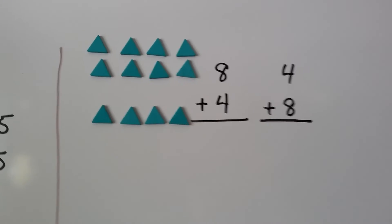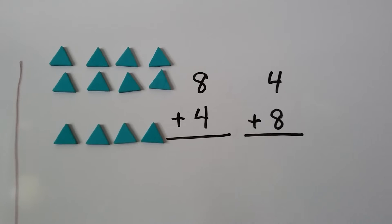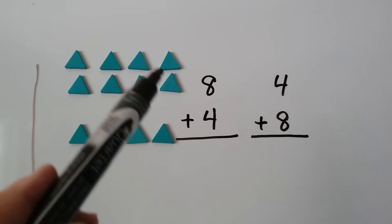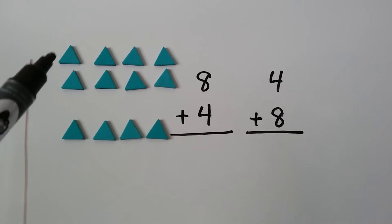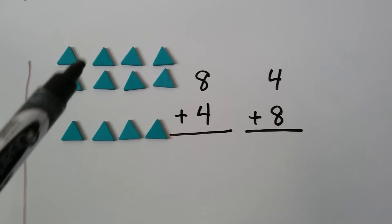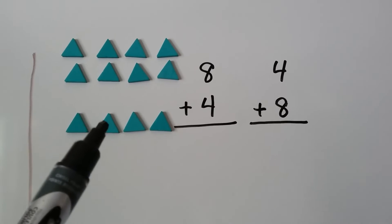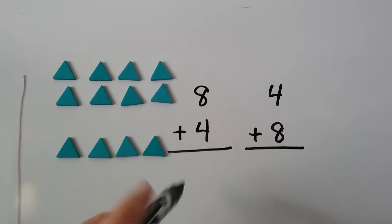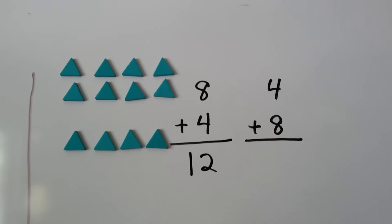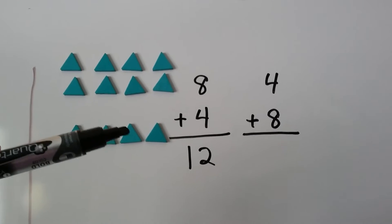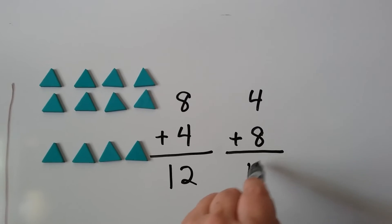Here we have eight plus four and four plus eight. We have eight green triangles and four green triangles. Counting them all: one through twelve. Eight plus four equals twelve, and if we add the four plus the eight, it's still going to equal twelve.